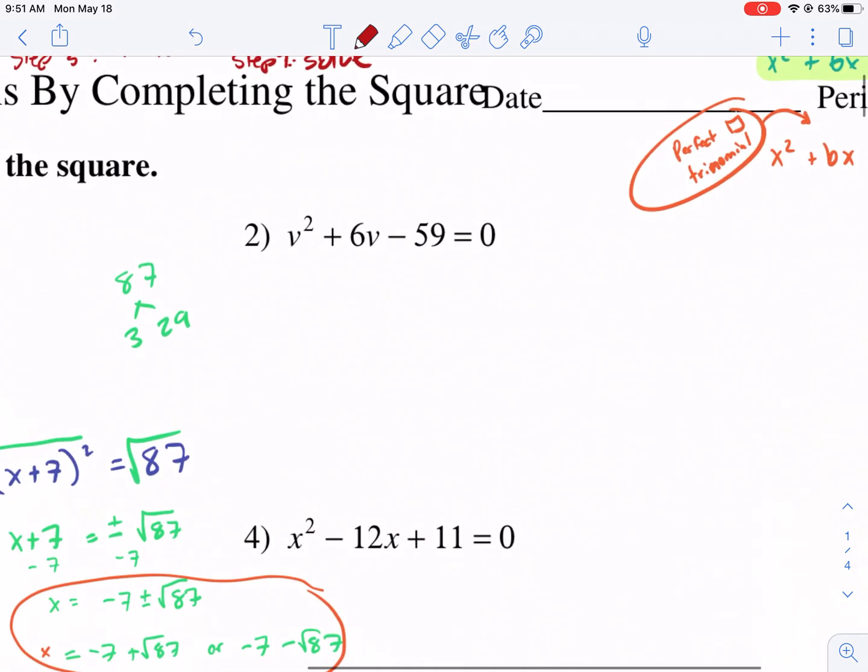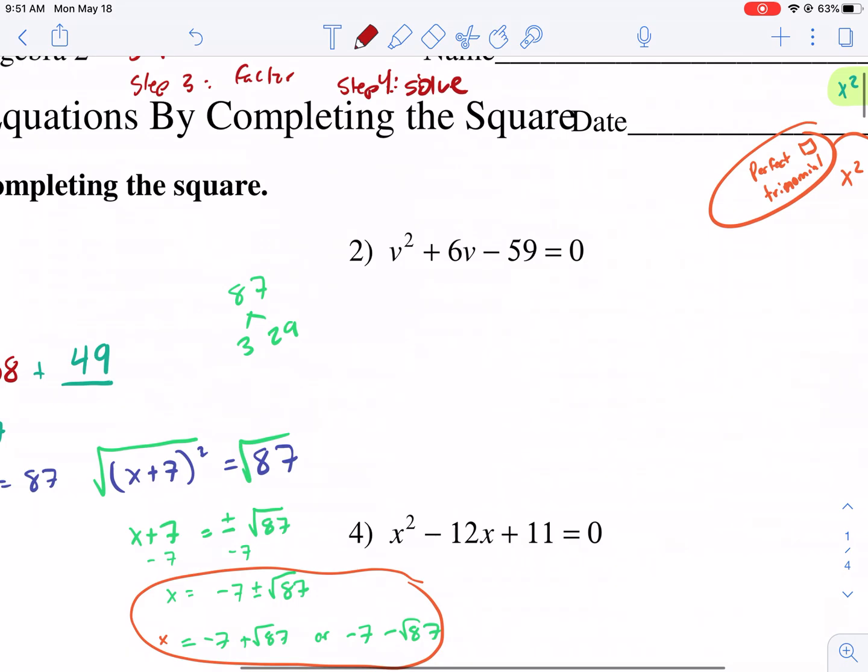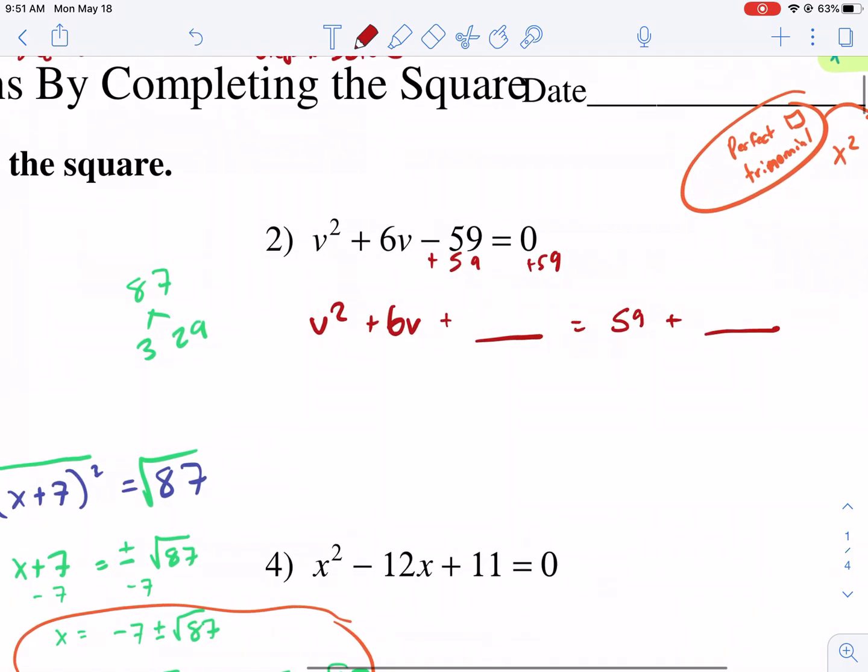Okay, we're going on to number two. So I'm going to rewrite this. We have v squared plus 6v. I'm going to move this 59 over first. So I have plus something equals 59 plus something. I like putting these blanks. It's kind of like my template that I use. Okay, now I'm going to do 6 divided by 2 squared. I'm adding that to both sides. That's 9. So I'm adding 9 to both sides.